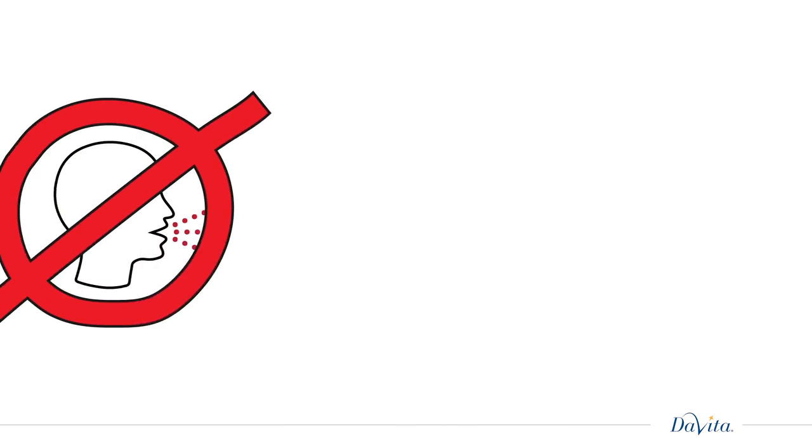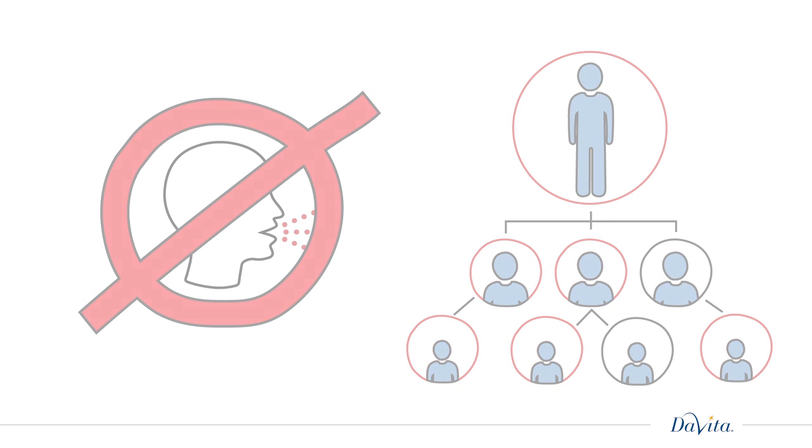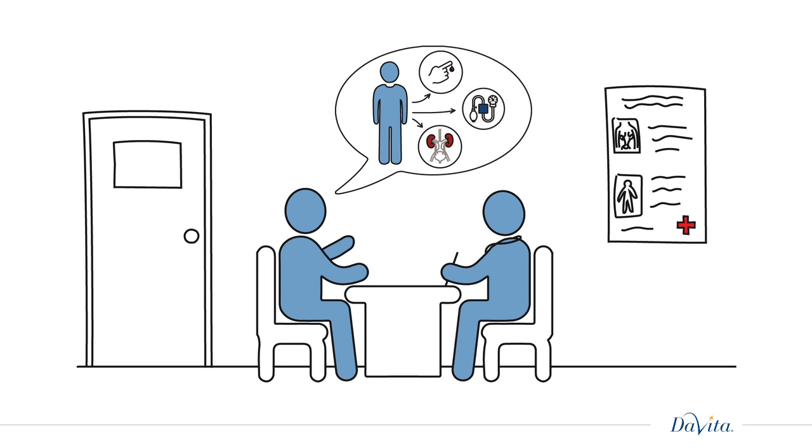Kidney disease is not contagious, but it can run in families. So if one of your family members has diabetes, high blood pressure, or kidney disease, you could be at risk and should tell your physician at your next checkup.